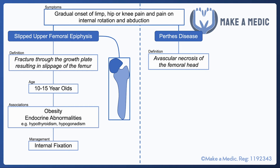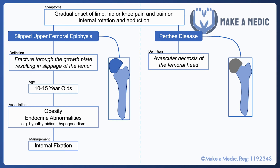Perthes disease is a condition in which you get avascular necrosis of the femoral head, and hence it looks a little bit like this, where anatomically everything is okay — it's just that there is some avascular necrosis going on within the femoral head.